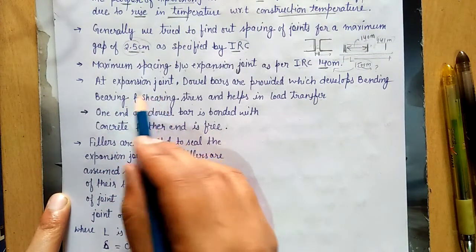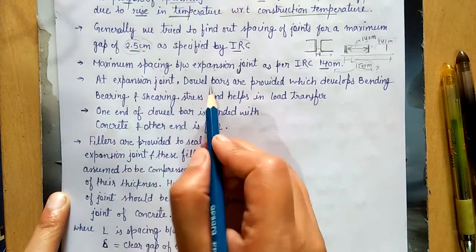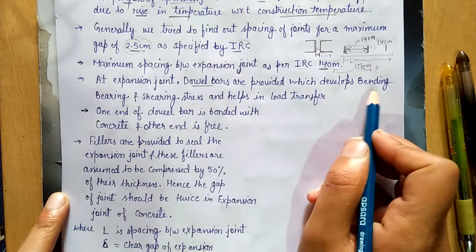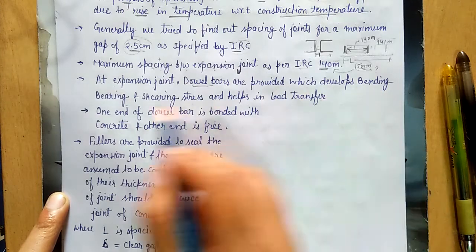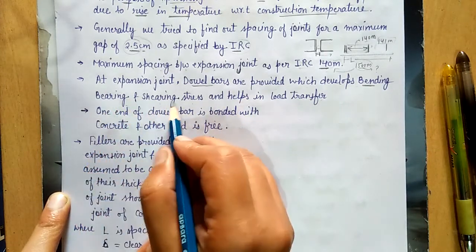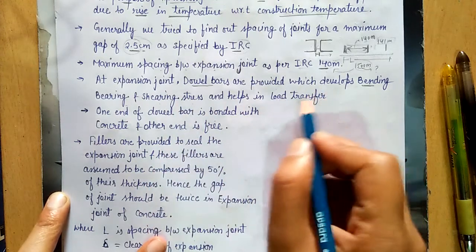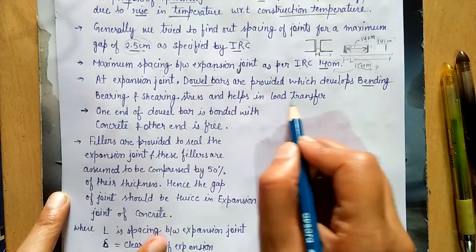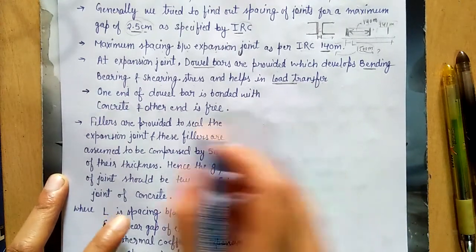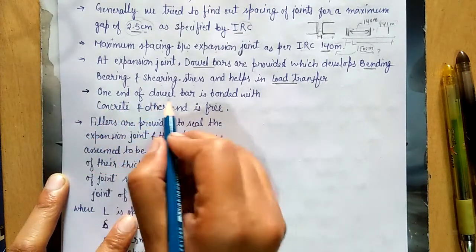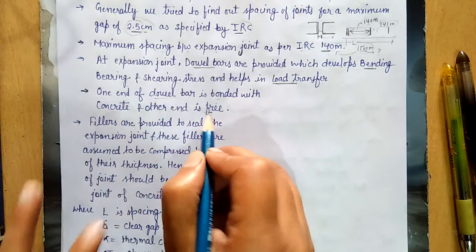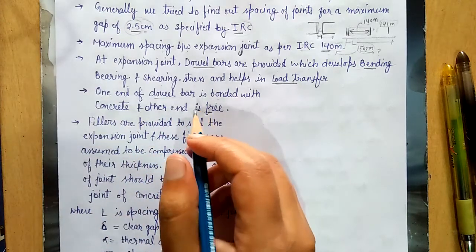At the expansion joint, we use dowel bars, which develop bending and bearing stress as well as shear stress, and transfer load across the joint. One end of the dowel bar is bonded with the concrete and the other end is free.